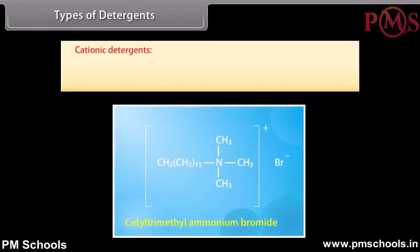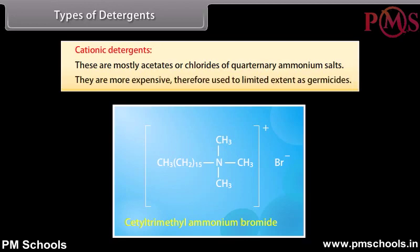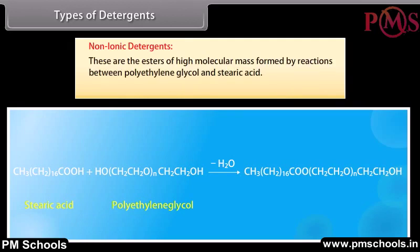Cationic detergents are mostly acetates or chlorides of quaternary ammonium salts. They are more expensive and therefore used to a limited extent as germicides. For example, cetyltrimethylammonium bromide. Non-ionic detergents are esters of high molecular mass formed by reactions between polyethylene glycol and stearic acid. Some liquid dishwashing detergents are of the non-ionic type.